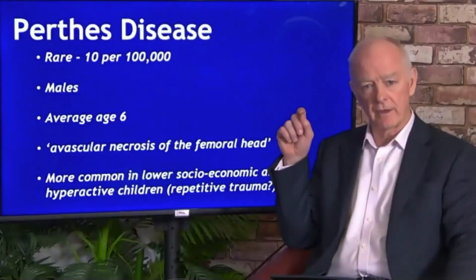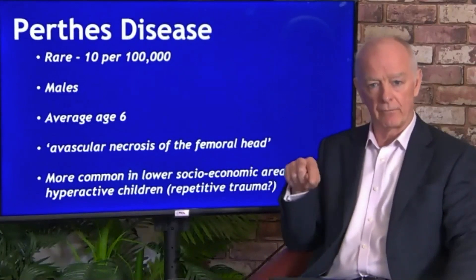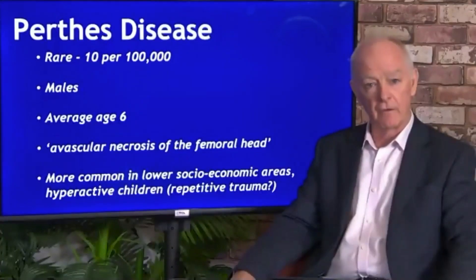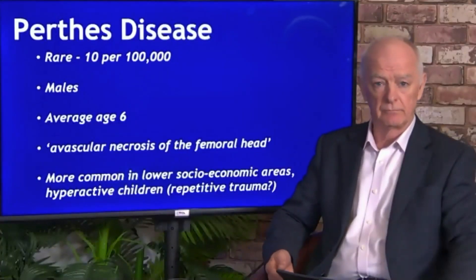Does Perthes actually occur after birth, or is it present at birth? It's something that starts for most children after the age of four or five, although it's usually about the age of six that it's diagnosed. It's very rare below the age of about three or four, and quite unusual if the child gets beyond the age of about seven or eight. You can get bilateral Perthes disease, but it is more common to be unilateral.